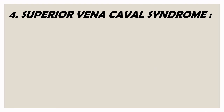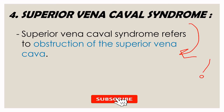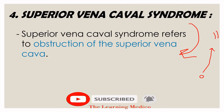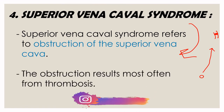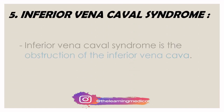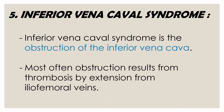Superior Vena Cava Syndrome means obstruction of the superior vena cava. The thrombus moves and causes obstruction in the superior vena cava. Inferior Vena Cava Syndrome — most often the obstruction results from thrombosis by extension from the iliofemoral veins. The thrombosis moves upward and causes obstruction in the inferior vena cava.